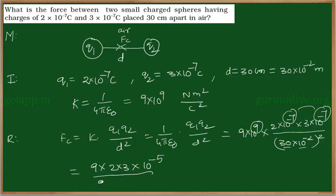So 3 squared is 9 times 10⁻². The 9s get cancelled, so 2 times 3 equals 6 times 10 to the power of minus 3 newtons, or 6 millinewtons. So this is the Coulomb force between those two charges.